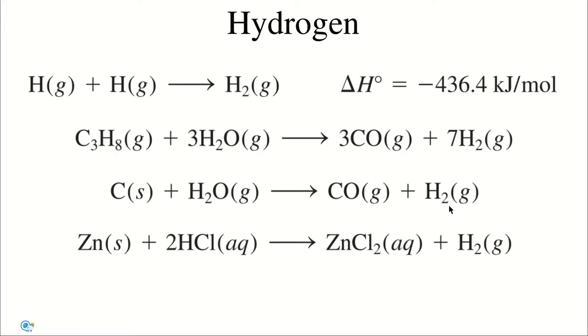Small quantities of hydrogen can be prepared conveniently in the laboratory by the reaction of zinc with diluted hydrochloric acid. The products will be hydrogen gas and an aqueous solution of zinc chloride.